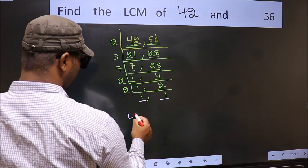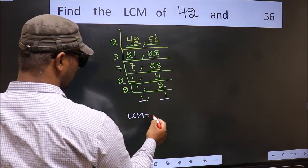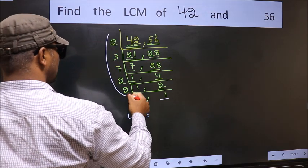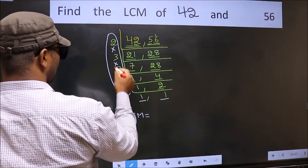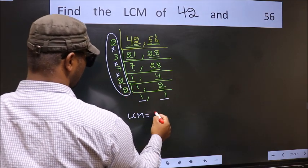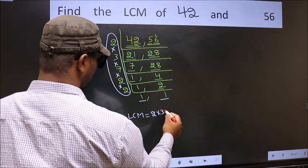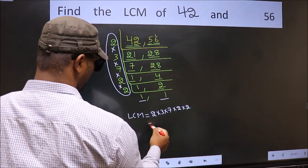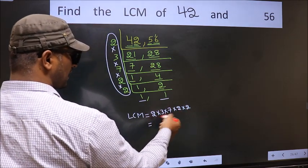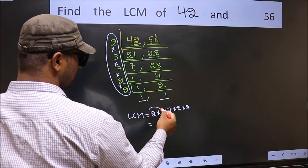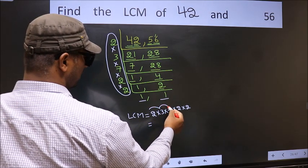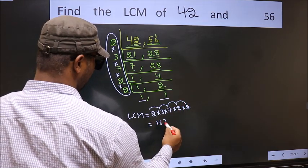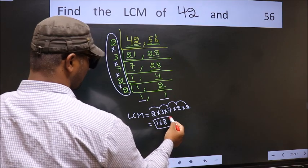The LCM is the product of these numbers: 2 times 3 times 7 times 2 times 2. Let us multiply these numbers. 2 times 3 is 6, 6 times 7 is 42, 42 times 2 is 84, 84 times 2 is 168. 168 is our LCM.